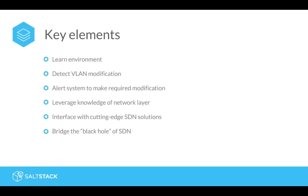Some network administrators, to bridge this gap, just put all possible VLANs on every interface, which defeats the purpose of the VLAN in the first place. We had to detect VLAN modifications on the hypervisor server, alert SALT to make the required network modifications, and leverage knowledge of the network layer gathered at the beginning. We also needed to interface with the cutting-edge SDN solutions — in this case, BigSwitch's BigCloud Fabric API — and bridge that black hole of SDN to the legacy hardware.